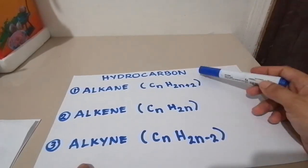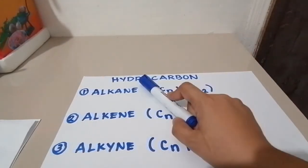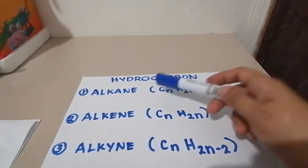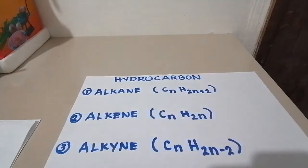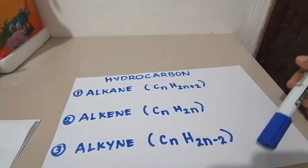When we say hydrocarbon, these are compounds that only contain hydrogen and carbon. There are three hydrocarbons that I'm gonna discuss today and those are the alkane, alkene, and alkyne. I'll be discussing the difference of these three.